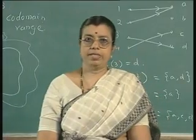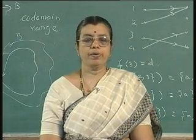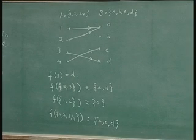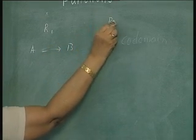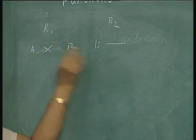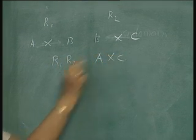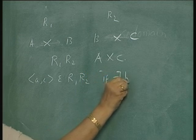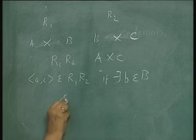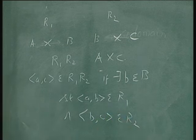Next we shall consider composition of functions. You know that you can combine relations. If you have relations R1 on A×B and R2 on B×C, then R1∘R2 specifies a relation on A×C defined as: (a, c) belongs to R1∘R2 if there exists b in B such that (a, b) belongs to R1 and (b, c) belongs to R2. This is how we define composition of relations. Now, how do you define composition of functions?